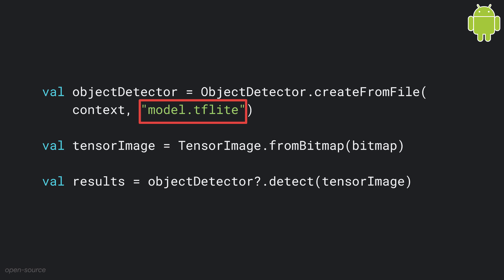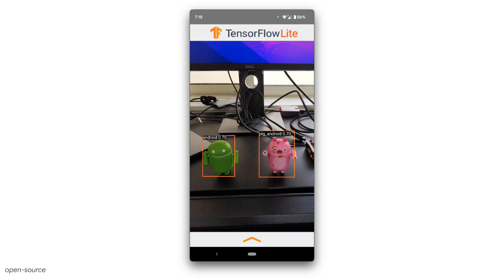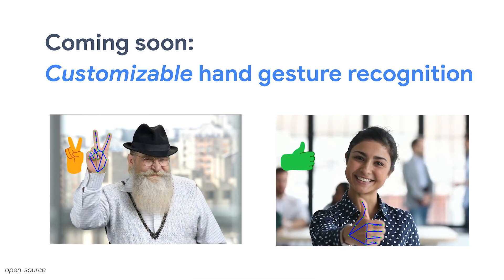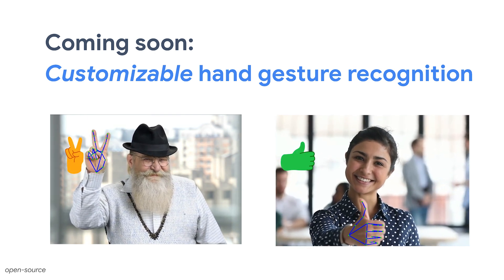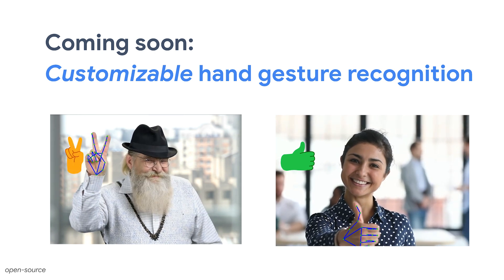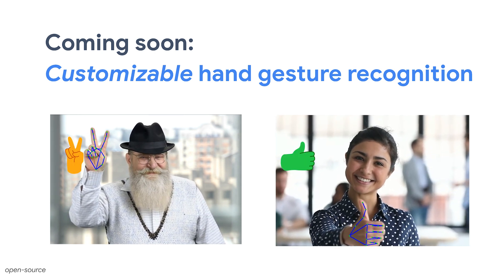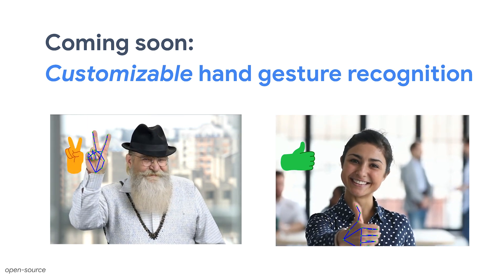Now, as you have finished training the custom model, let's switch to the Android app to deploy it. Deploying the custom model is very easy — you can reuse the code in the demo app and just replace the pre-trained model with your custom model. Here's the custom model in action: instead of detecting general objects, the app can now detect Android figurines. We're working hard on improving ModelMaker. In the coming months, we'll add more use cases, including training a custom model to recognize different hand gestures — a very useful ML task that can power many on-device applications.